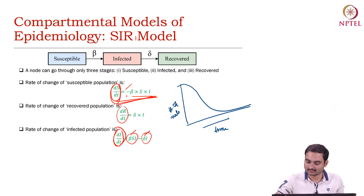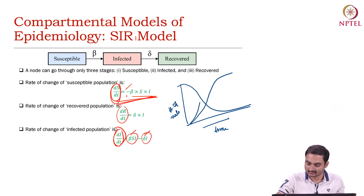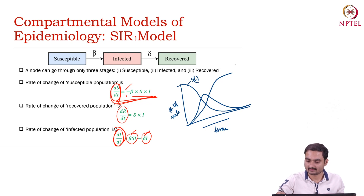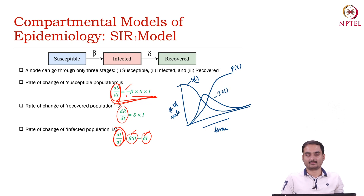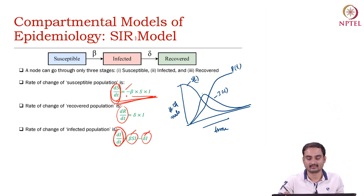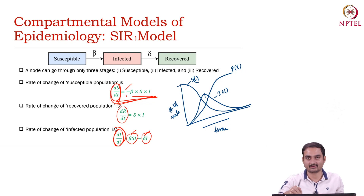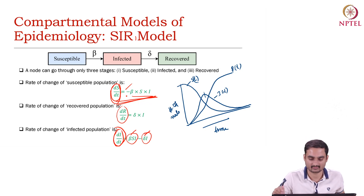Similarly, the number of recovered users will increase over time and the number of infected users would look like a bell curve. This is S(t), this is R(t), and this is I(t). This is quite intuitive: as susceptible users decrease, infection increases up to a certain point where most susceptible users are infected, then infection decreases and recovery increases.